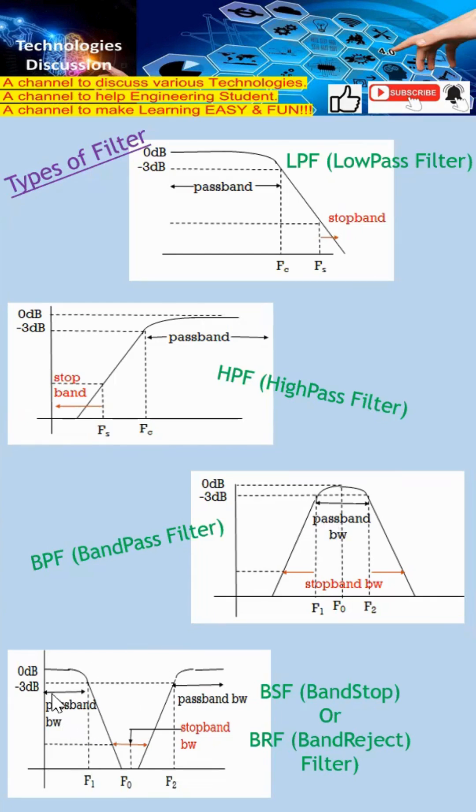This is known as band stop or band reject filter because they also specify F1 to F2. All these bands are not allowed to pass.